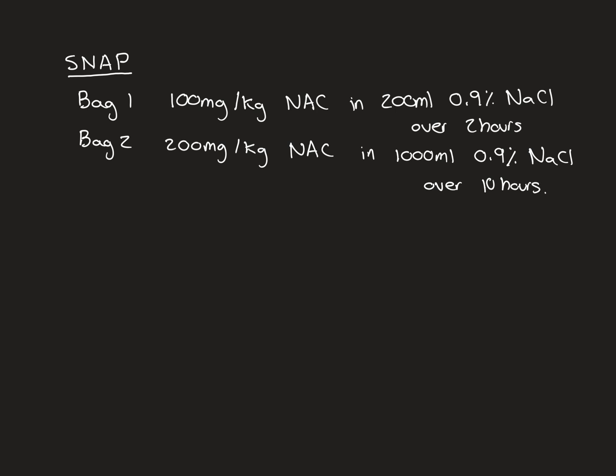Again, if we have our 70 kilogram patient, then we'd multiply 200 by 70 to get 14,000. So you'd want 14,000 milligrams of NAC to be put into this liter bag of normal saline, and then that needs to be run over 10 hours. You only commence bag 2 once bag 1 has finished. So overall, the whole thing will take just over 12 hours, budgeting in the time in between for taking down bag 1 and putting up bag 2.